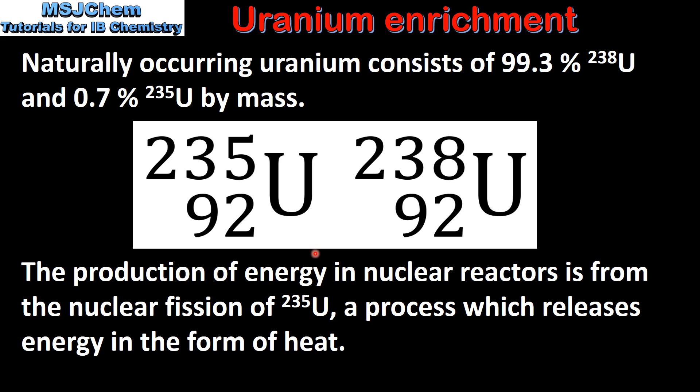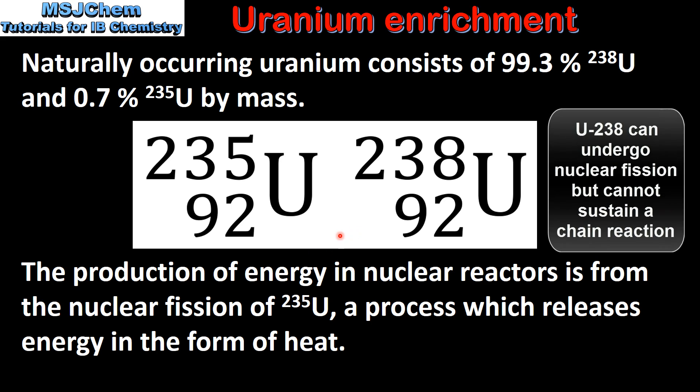So to summarize, naturally occurring uranium consists more of the heavier isotope. However, it's the lighter isotope that can undergo nuclear fission and sustain a chain reaction.